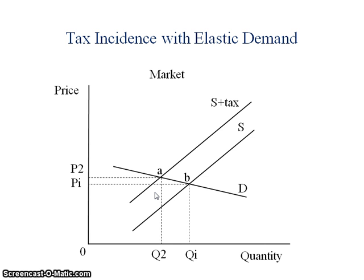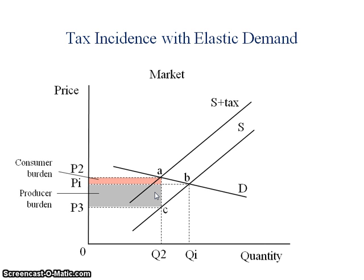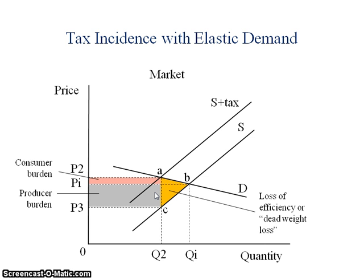Note that in this particular case the market quantity has fallen by quite a great bit. The next thing I need to figure out is the price that the producer gets to keep, P3. The taxation burden in this particular case with elastic demand has not fallen as much on consumers as it has fallen on producers. This is because the demand is elastic — consumers are sensitive to price changes and have the ability to substitute out of consuming this particular good or service, leaving the producer with bearing the burden of the taxation. We still have quite a great deal of deadweight loss or loss of efficiency to society.